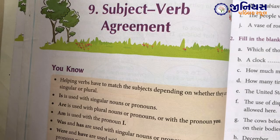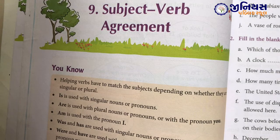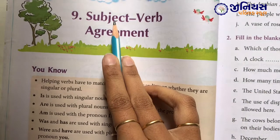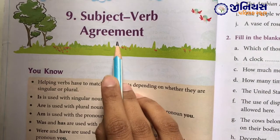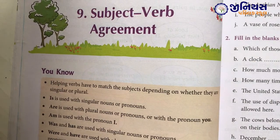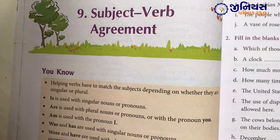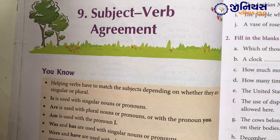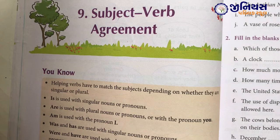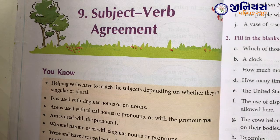Hello students. Today we are again back with a new chapter. Our new chapter is Subject-Verb Agreement. Agreement means the subject — which is a noun or a pronoun — must agree with the verb. Action words are called verbs.